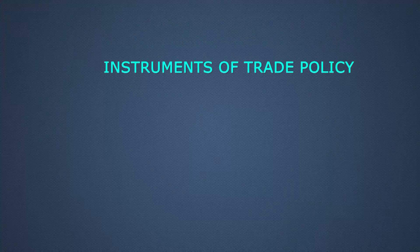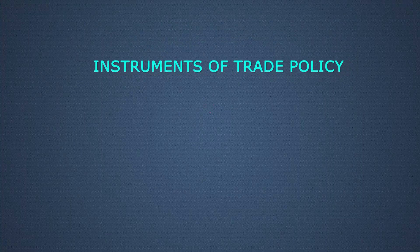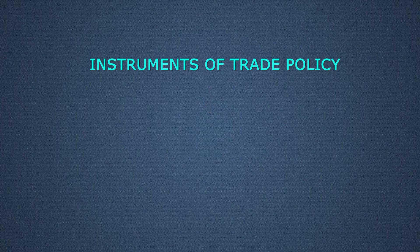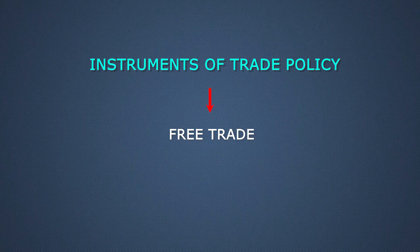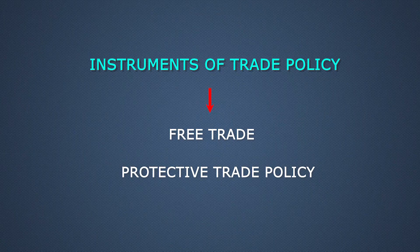First, we must understand that instruments are required for the Protective Trade Policy. If the economy is following free trade, then there is no need of protection. So, to discuss about the Instruments of Trade Policy, let me divide the unit into two parts. The first part we are going to discuss about free trade, and in the next part we will explain the Protective Trade Policy.